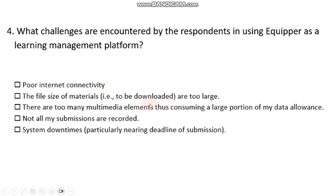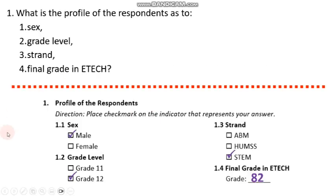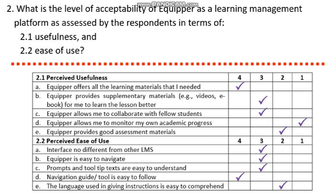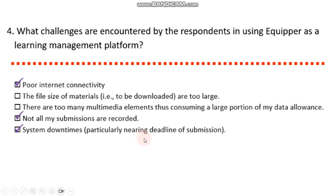So how do we do the coding process? For example, for the options under profile, we assign numbers: 1 if male is checked, 2 if female is checked; 1 if grade 11 is checked, 2 for grade 12; 1 if ABM is checked, 2 for UMSTEM, and 3 for STEM. For the final grade, we just type the actual value. For the level of acceptability, if 4 is checked we type in 4, if 3 is checked we type in 3 — meaning the codes are the represented values based on the rating scale. For the challenges encountered, we use 0 if the option is not checked, and 1 if it's checked.